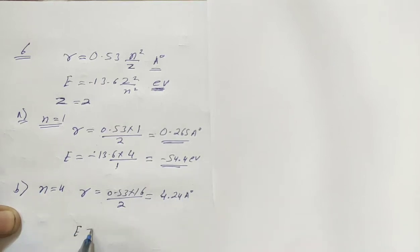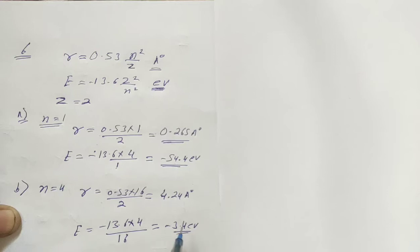Next, energy is minus 13.6 z squared upon n squared. With z equals 2 and n equals 4, this is 13.6 times 4 upon 16. Dividing by 4, this equals 3.4 electron volts.